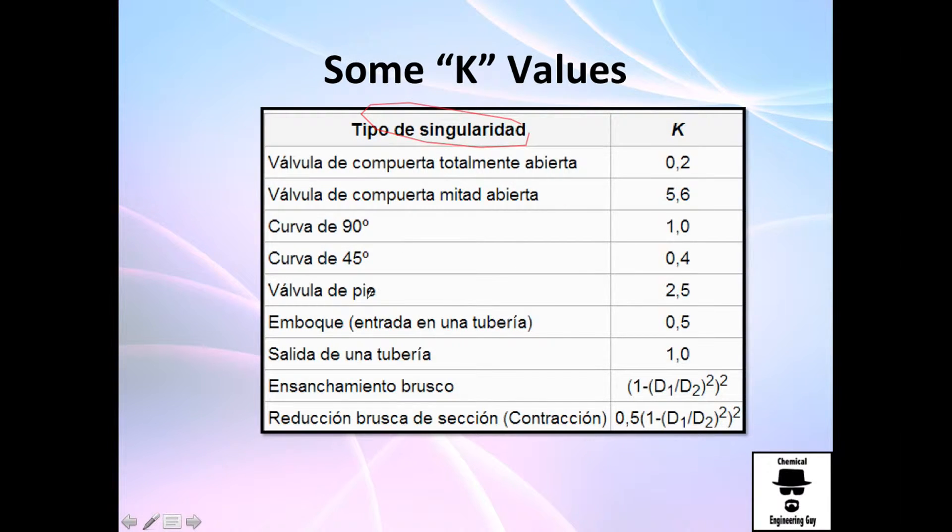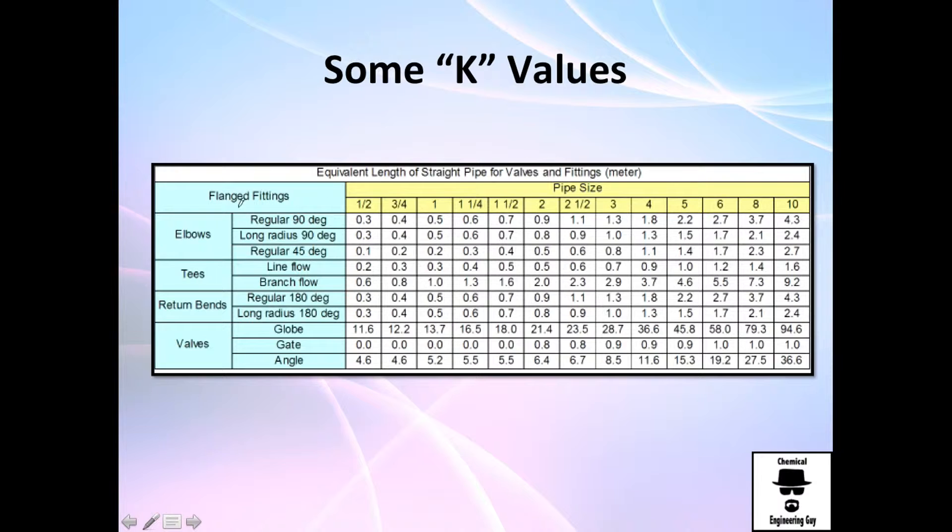Sorry for the Spanish table, but I didn't find it in English. This is from Wikipedia, and I got, for example, some valves, some pipe outlet, some expansion, some reduction, and so on. There are many, many on the internet. You can find elbows with respect to pipe size. Of course, if you have pipe size huge, you're going to have other values, some valves, and so on. Same stuff here.